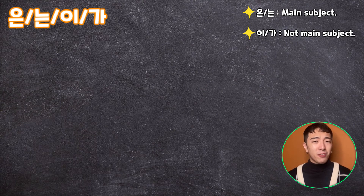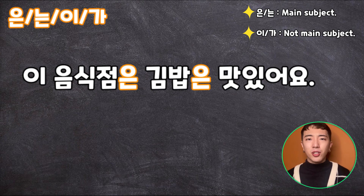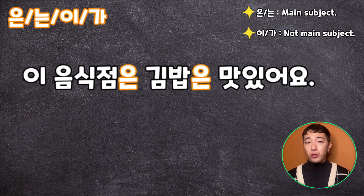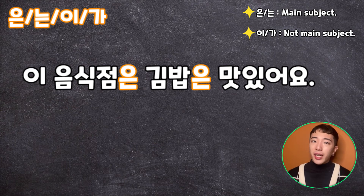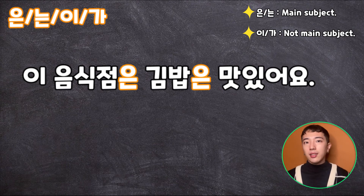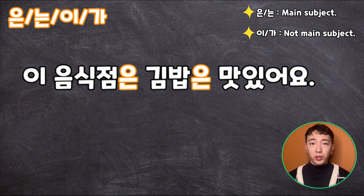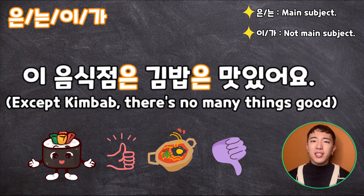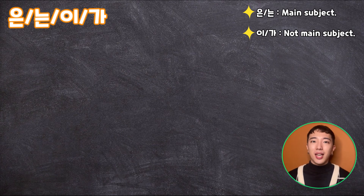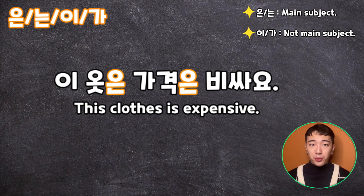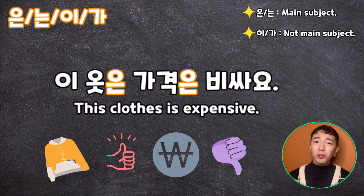A more difficult quiz: 이 음식점은 김밥은 맛있어요 — what does it mean? 은/는 is referring to contrast. When you use 은/는 in a row, the second 은/는 is used to show contrast. So it means everything is bad at this restaurant, but only 김밥 is good. Quiz: 이 옷은 가격은 비싸요. You can see two 은 in a row. So it means everything about this clothing is good, but the price is expensive.